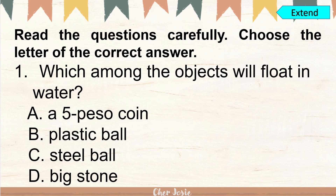For your last task, please bring your paper and answer these questions. Choose the letter of the correct answer. Number one: which among the objects will float in water? A. A five peso coin. B. Plastic ball. C. Steel ball. Or letter D. Big stone. The correct answer is letter B. Plastic ball.